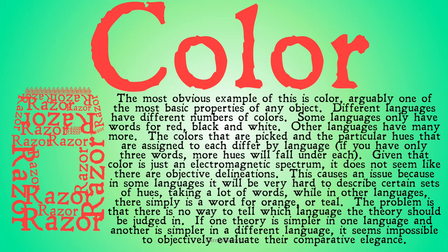If one theory is simpler in one language and another is simpler in a different language, it seems impossible to objectively evaluate their comparative elegance. In other words, even if you think that natural kinds exist out there in the world, we don't yet agree on what those natural kinds are. As long as there are two people that group natural kinds differently, it's possible to have this issue where using one set of terms makes one theory simpler, while using a different set of groupings makes a different theory simpler. And so until we all agree on the objectively right way to group things like colors, there's no way to distinguish which theory is actually more elegant — just like with Grue and green.